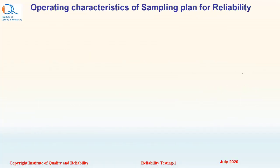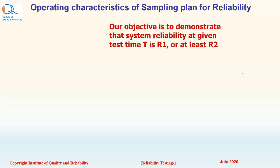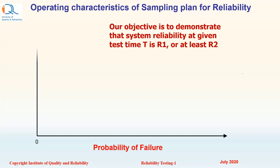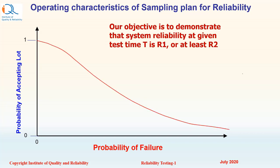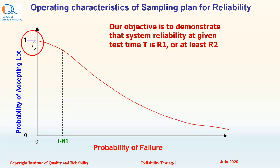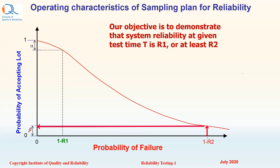Let us discuss the operating characteristics of a sampling plan for reliability. Our objective is to demonstrate that system reliability at a given test time t is R1, or at least R2. The x-axis of the OC curve is probability of failure and the y-axis is probability of acceptance from 0 to 1. At probability of failure 1 minus R1 — that is the good reliability we want to demonstrate — the probability of acceptance should be high, and 1 minus that probability is the alpha risk. If the lot has reliability R2, the probability of failure is 1 minus R2, and the probability of accepting such a lot should be very low — that is beta, the consumer's risk.